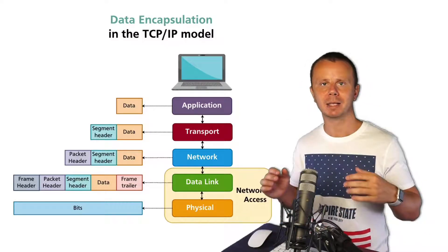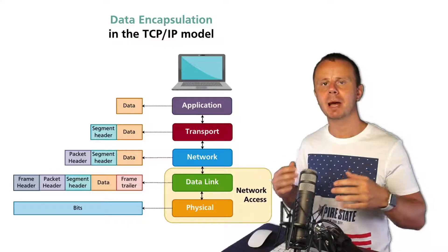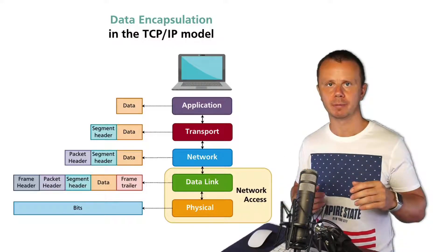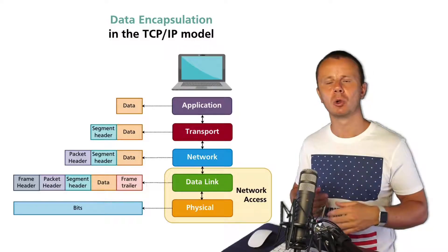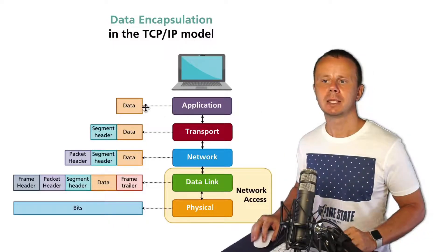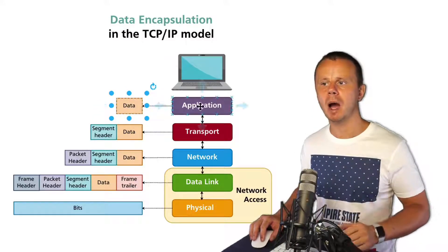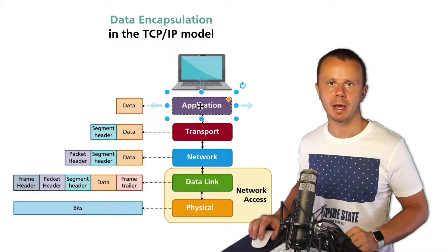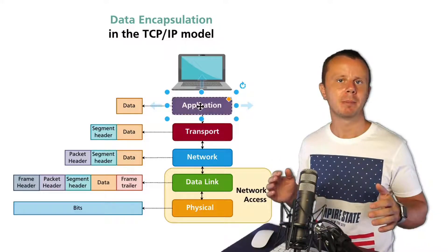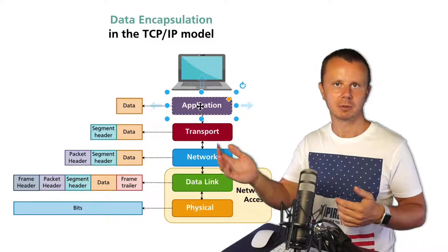Data encapsulation is a process of formatting data, and this process adds some additional overhead on each layer. This overhead is called a header. For example, let's say there is some data ready to be transmitted on the application layer — let's say we have composed an email that is ready to be sent to another device.